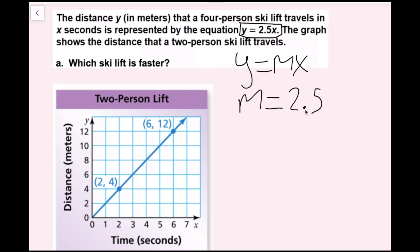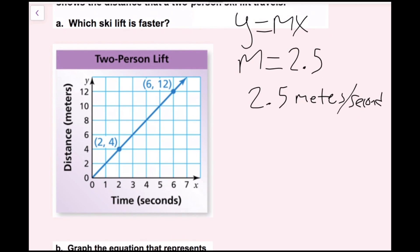Another way to say that is our speed is 2.5 meters per second. Now I need to find the slope of the two-person ski lift from the graph using rise over run. Note that on the y-axis each space is two meters, while on the time axis each space is one second.